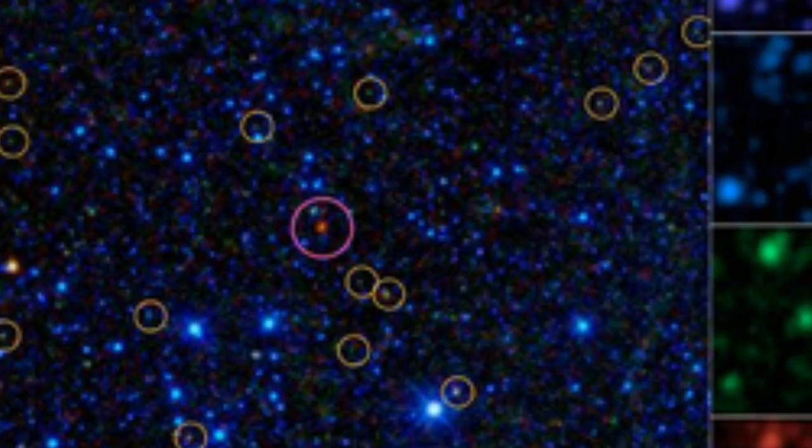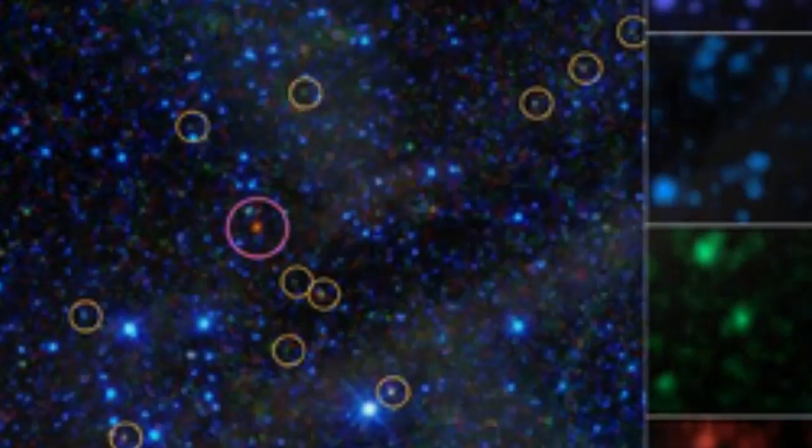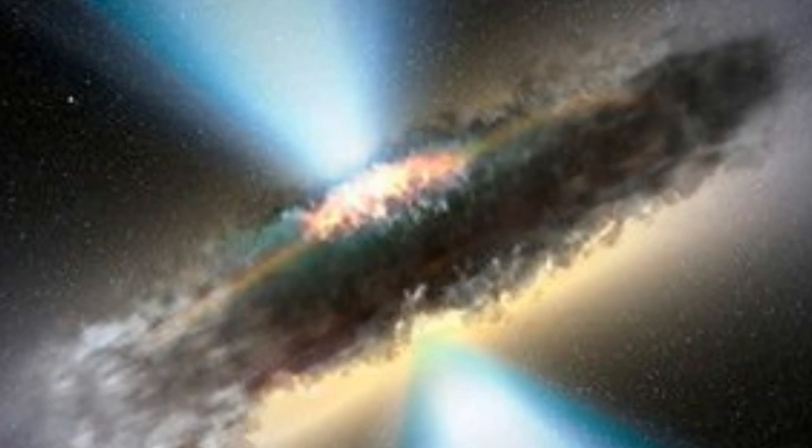It is known that most large galaxies host black holes at their centers, sometimes feeding on nearby gas, dust and stars, and sometimes spraying out enough energy to halt star formation altogether.